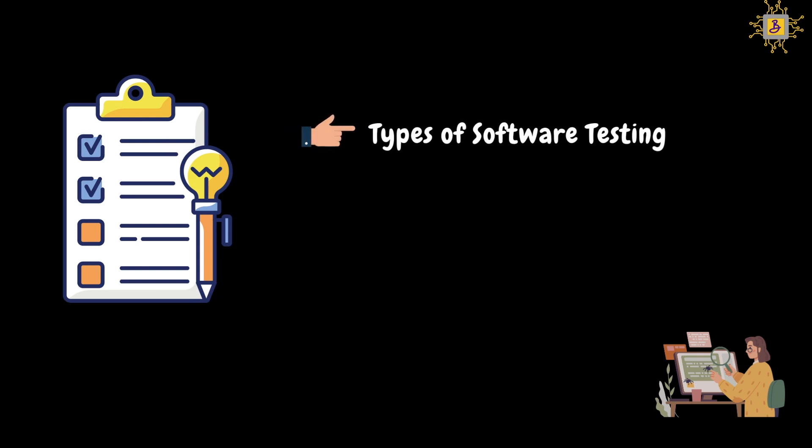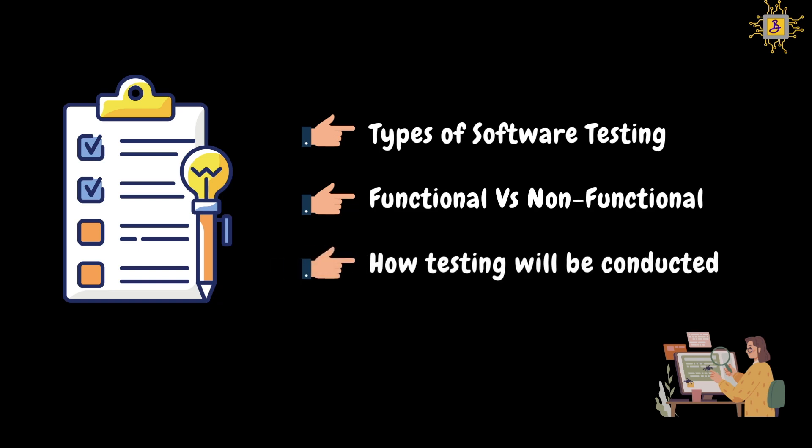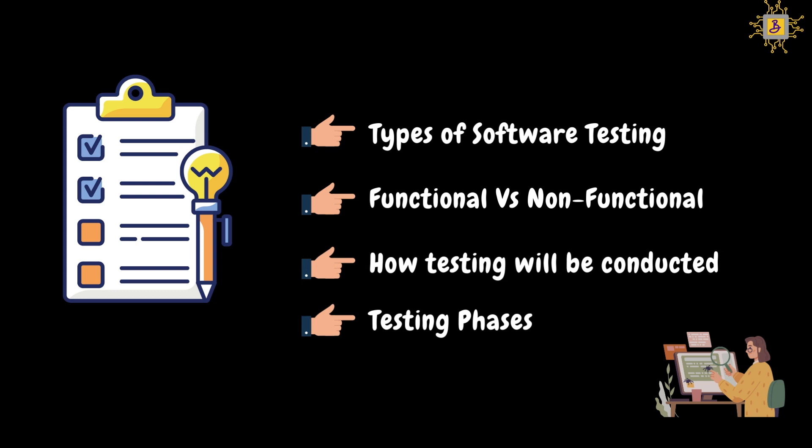Let's start with the topics covered in this video. First, we will discuss different types of software testing. Then we will discuss functional testing, non-functional testing, and the different types of tests performed in each category. Also, we will look at the differences between functional and non-functional testing, and how testing will be conducted in each category. Finally, we will end this video with different phases in testing. So without any further delay, let's dive into it.